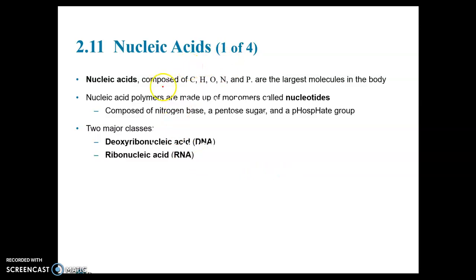Nucleic acids are composed of the same first three elements as the other macromolecules: carbon, hydrogen, oxygen, and then nucleic acids have nitrogen like proteins, and also phosphorus. They are the largest molecules in the body. The monomers or building blocks of nucleic acids are nucleotides, just like the building blocks of proteins are amino acids. The nucleic acid would be the polymer, and nucleotides would be the monomers.